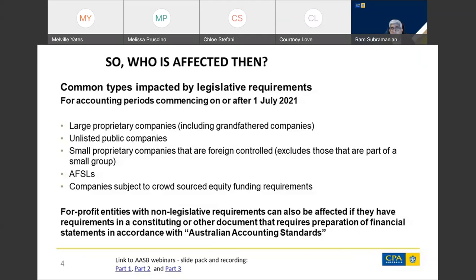From 1 July 2021, entities with legislative requirements will be affected, but entities with non-legislative requirements may also be affected in terms of their preparation of financial statements. If you are interested in the for-profit sector, the AASB has recorded three webinars which go into detail on the changes, and links are provided in the slides. These slides will be available to participants after the presentation so you can click through to those links.